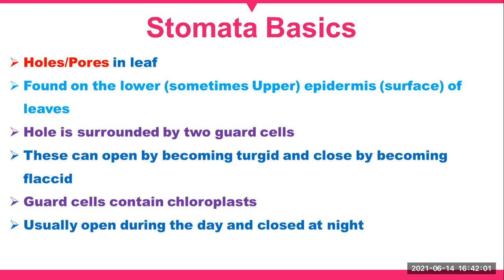Regarding the basics of stomata: these are holes or pores in a leaf found on the lower, and sometimes upper, epidermis or surface of the leaves. The stoma is surrounded by two guard cells. This can be opened by becoming turgid and closed by becoming flaccid. Guard cells contain chloroplasts and usually open during the day and close at night.